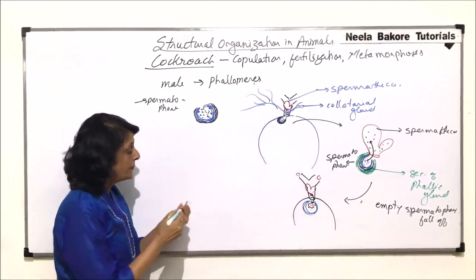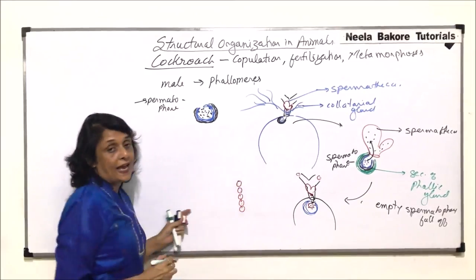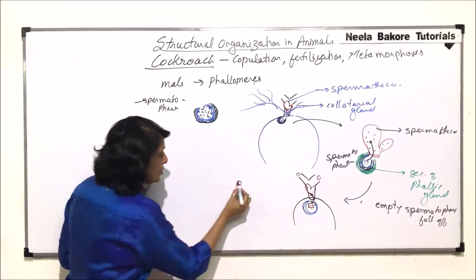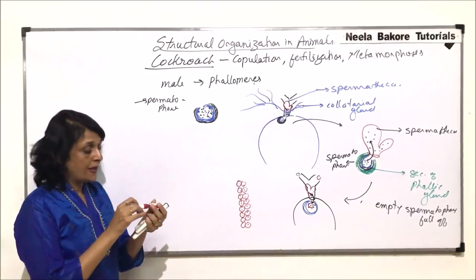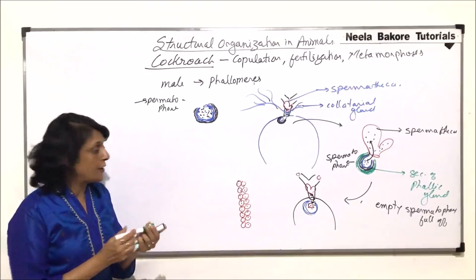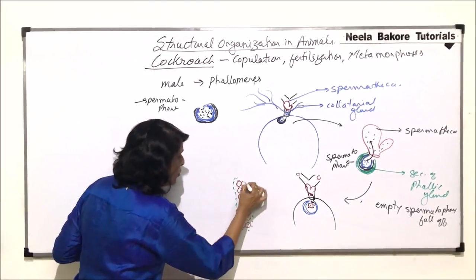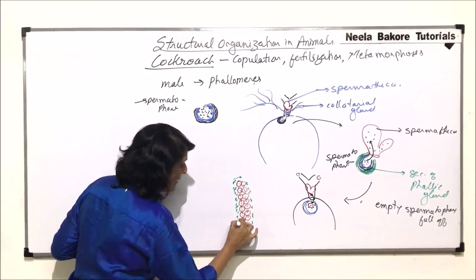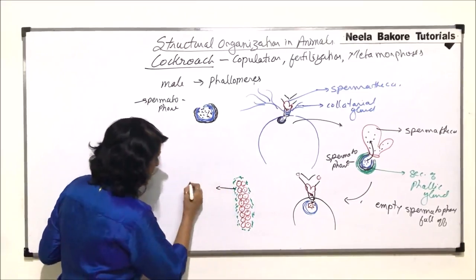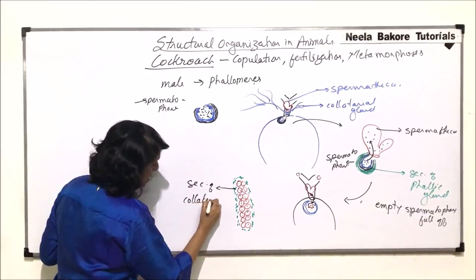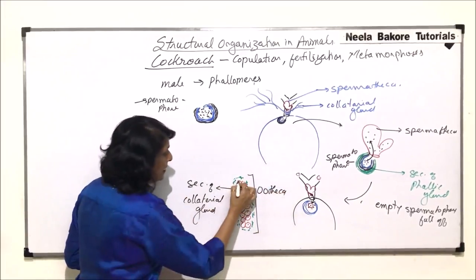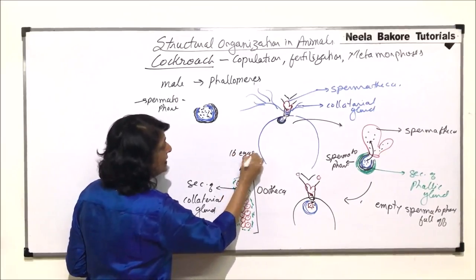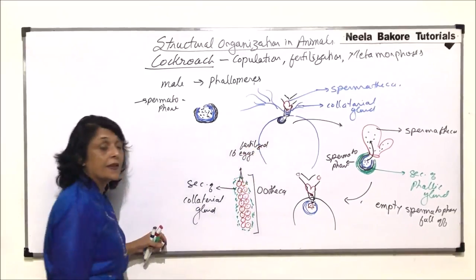There are 16 eggs arranged in two rows of eight each. These eggs are fertilized in the genital sac. After fertilization, the entire structure is covered by the secretion of the collateral gland — the secretion of the collateral glands. This entire structure is known as the ootheca. There are a total of 16 fertilized eggs and the ootheca is formed.